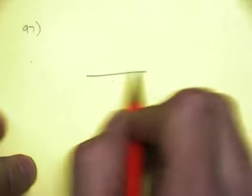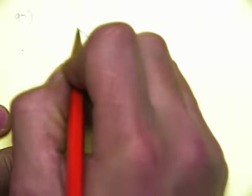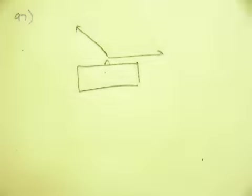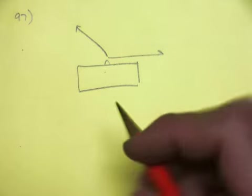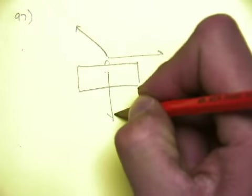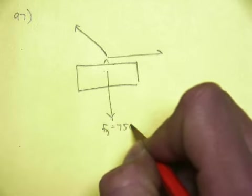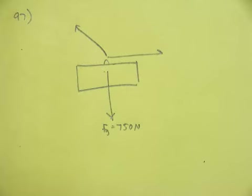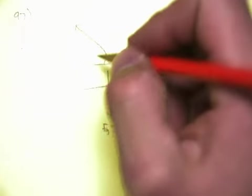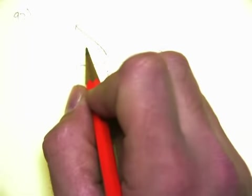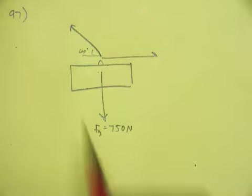You've got a sign, and it's being suspended between two ropes. And this sign weighs 750 newtons. We know that this angle is 60 degrees. Well, they tell you this is 30, so it's a 30-60-90 triangle.